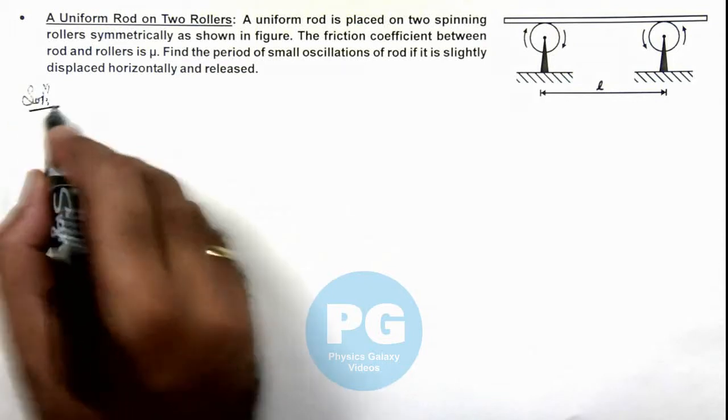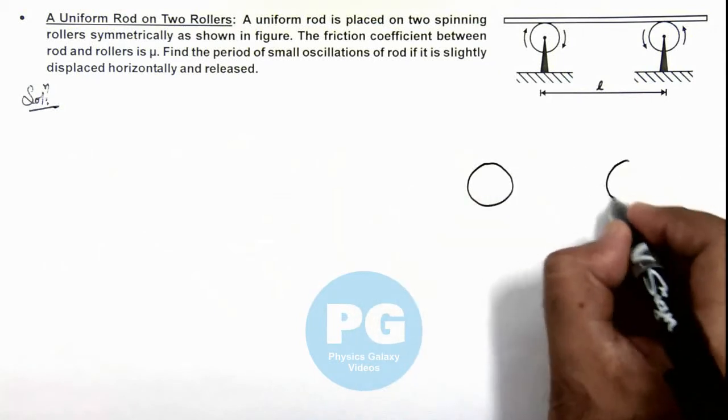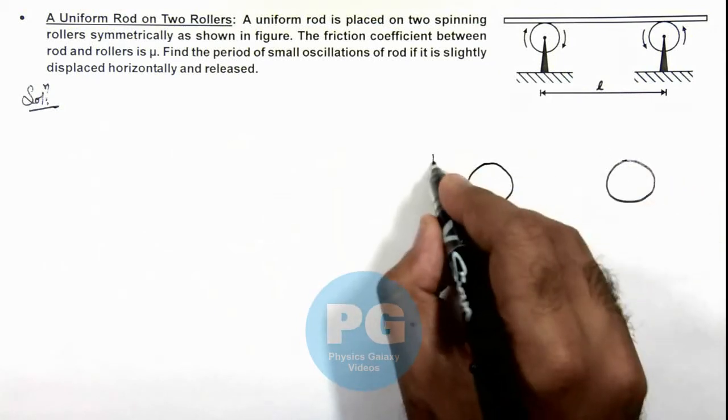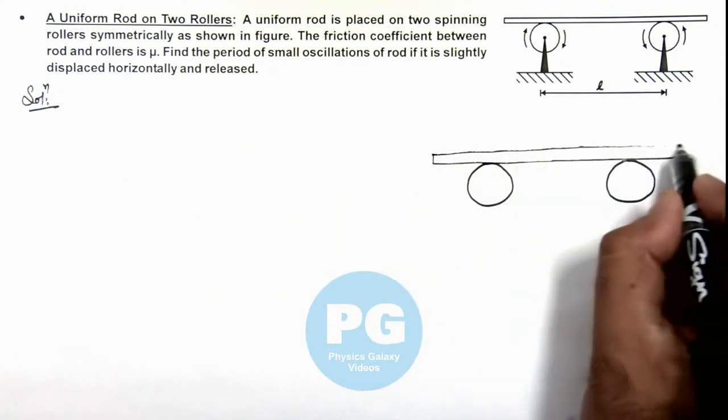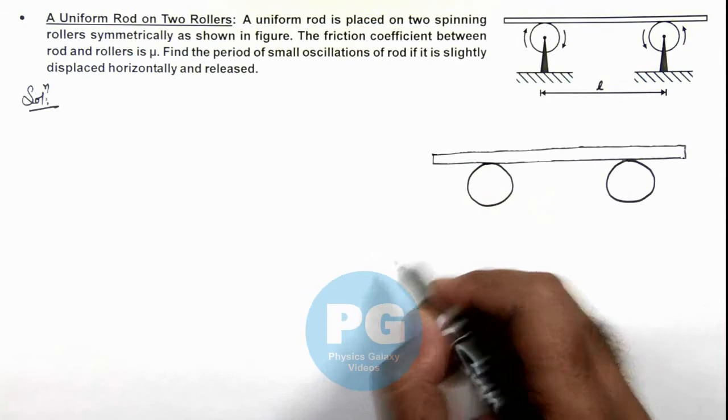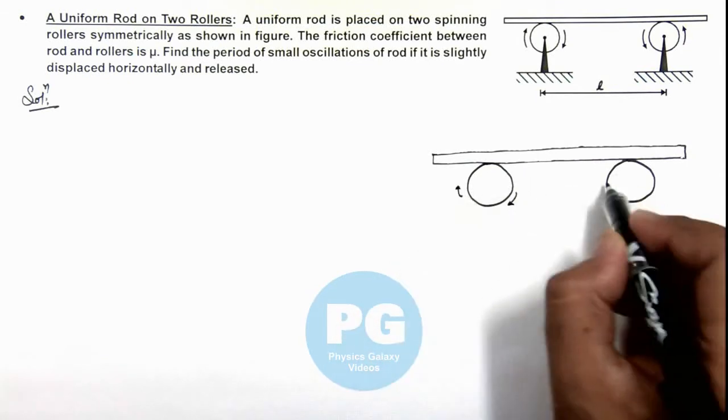Here first we need to understand the situation. We are given two rollers on which a uniform rod is placed. We can see the rollers are spinning in clockwise and anticlockwise manner.